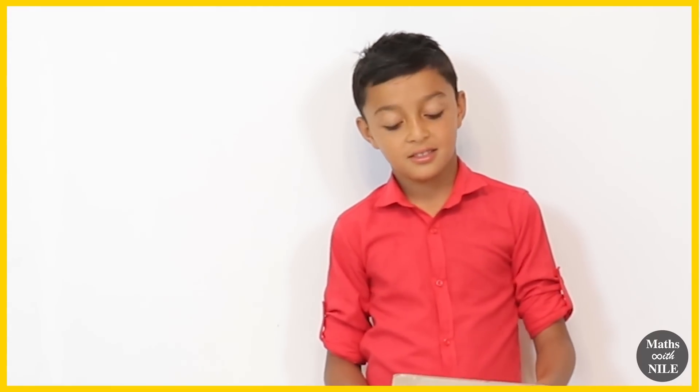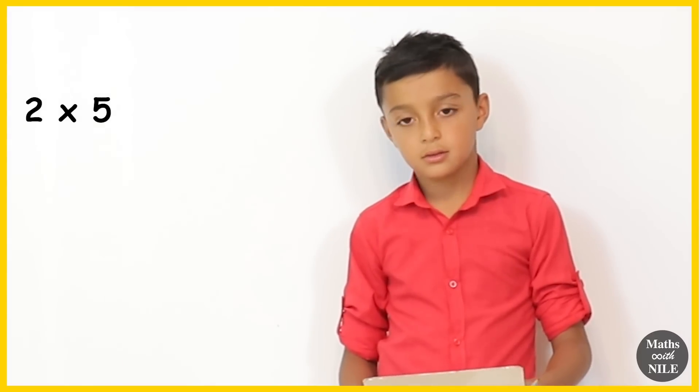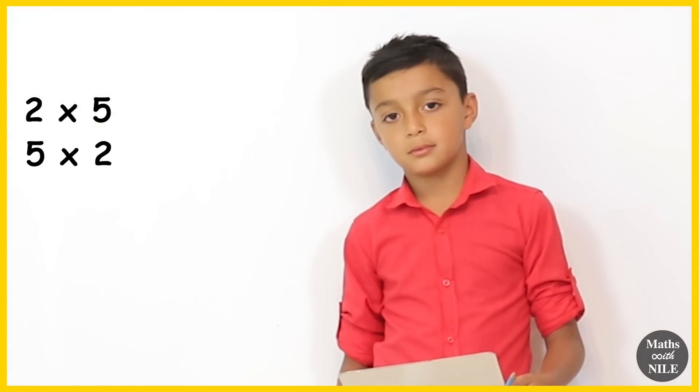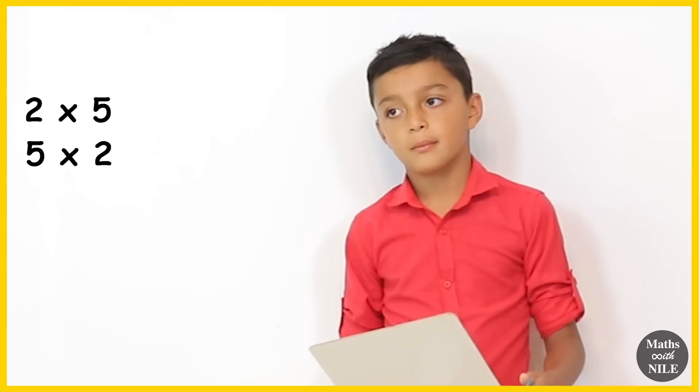Hi Niall. What happens when you swap numbers around? For example, 2 times 5 and if we did 5 times 2. Can you explain what's happening there?